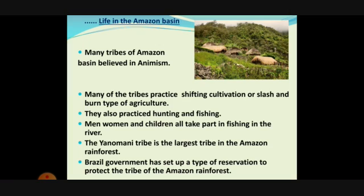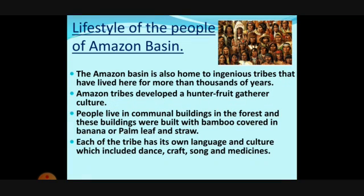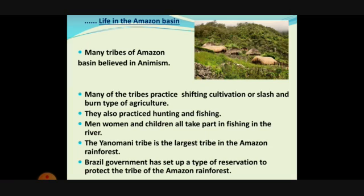They also practice hunting and fishing; men, women, and children all take part in fishing in the river. The Yanomami tribe is the largest tribe in the Amazon rainforest — there are many different tribes, and the Yanomami is the most important. The Brazilian government has set up reservations to protect the tribes of the Amazon rainforest, taking many steps because these tribes are on the edge of extinction. They should be protected as they are the original people who follow the culture, tradition, and practices of that area.